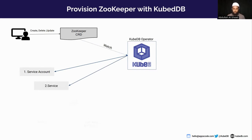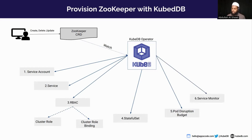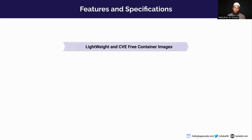KubeDB operator will create a service account, services to connect to ZooKeeper, necessary RBAC permissions to run in the cluster, a StatefulSet containing the images that run the actual database, a Pod Disruption Budget to ensure eviction and migration of instances happens in a synchronized manner, and when monitoring is enabled, a ServiceMonitor to export ZooKeeper metrics to Prometheus. It also creates an AppBinding with the necessary information to connect to the ZooKeeper instance, which is used by other apps like Stash.